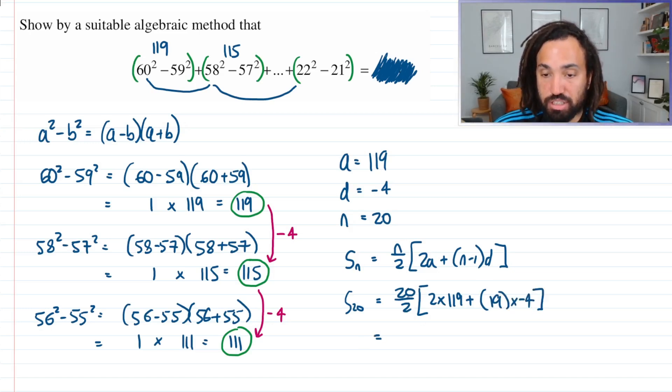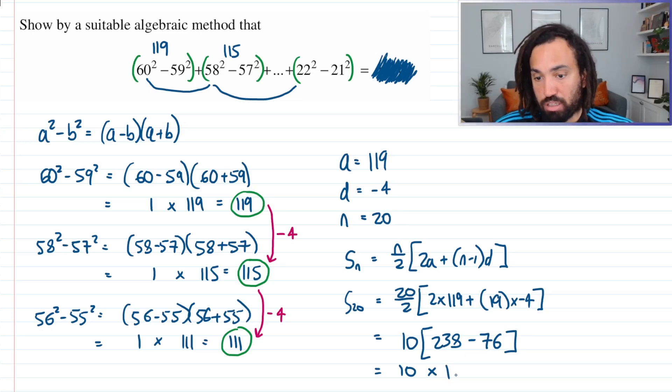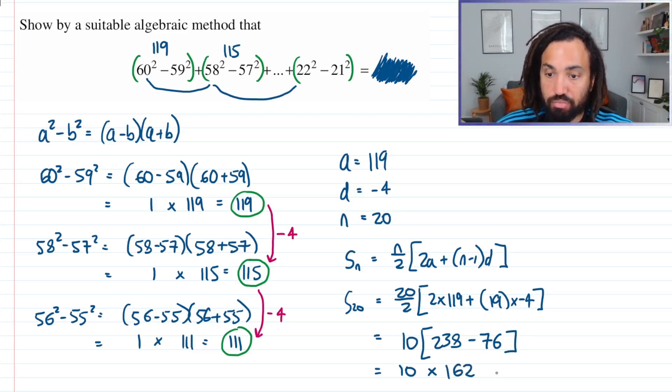So we need to carry on without using a calculator. 20 over 2 is 10, 2 times 119 is 238, and 19 times -4 is -76. So we've got 10 multiplied by, in here this will be 162, so overall it is 1620.